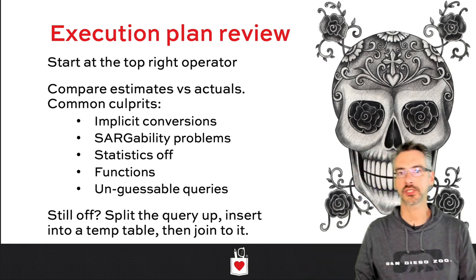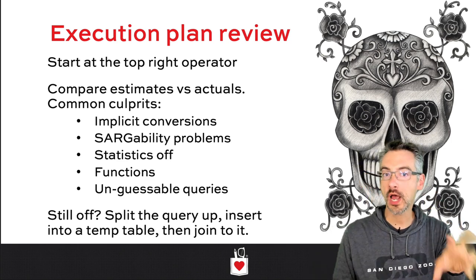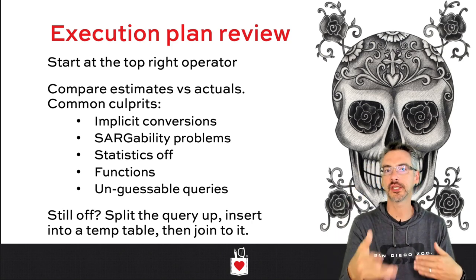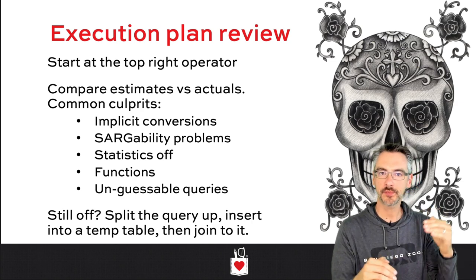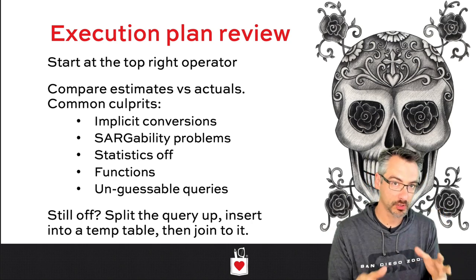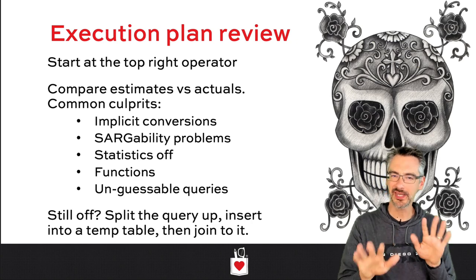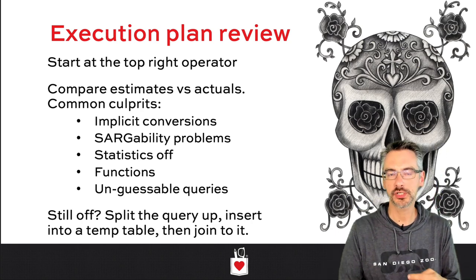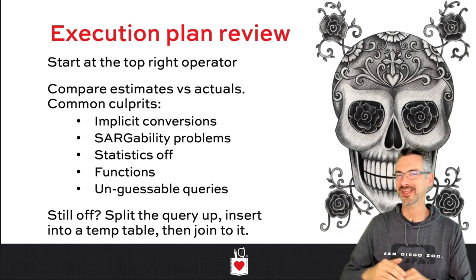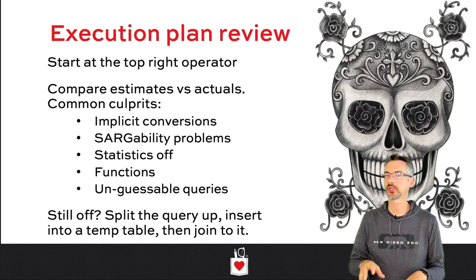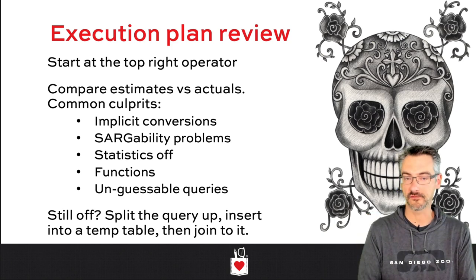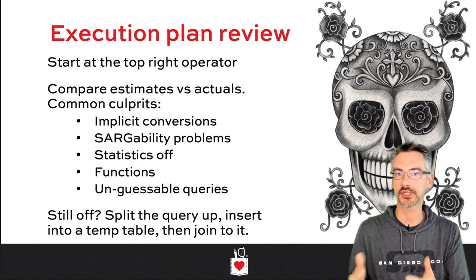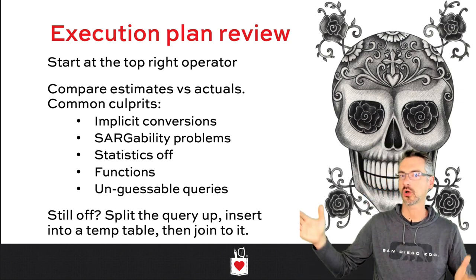I work through the execution plan from right to left, top to bottom, focusing on one operator at a time. I compare SQL Server's estimates versus actuals to see how close they are. Generally, when estimates versus actuals are within 10x, you get a fairly accurate plan. When estimates are more than 10x off, SQL Server probably didn't build an appropriate query plan — maybe it chose a table scan when it should have done an index seek, or vice versa.